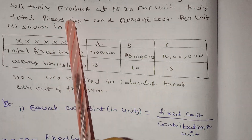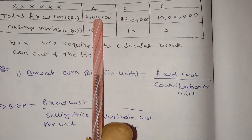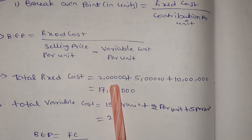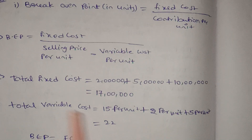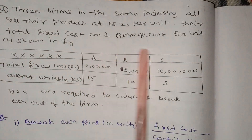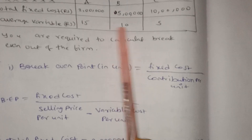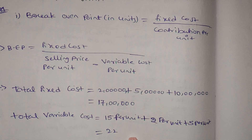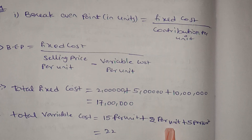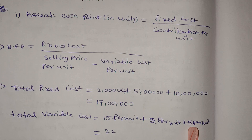Total fixed cost and average variable cost: for firm one — AVC is 15 per unit; firm two — 12 per unit; firm three — 5 per unit. So the values are 15, 10, and 5 respectively.